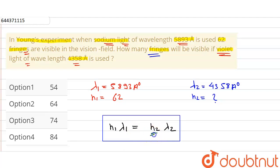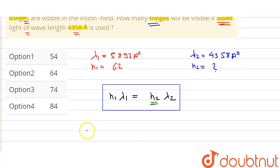Here we have to find the value of N2. Now we can write this as N2 equals N1 times lambda 1 upon lambda 2.